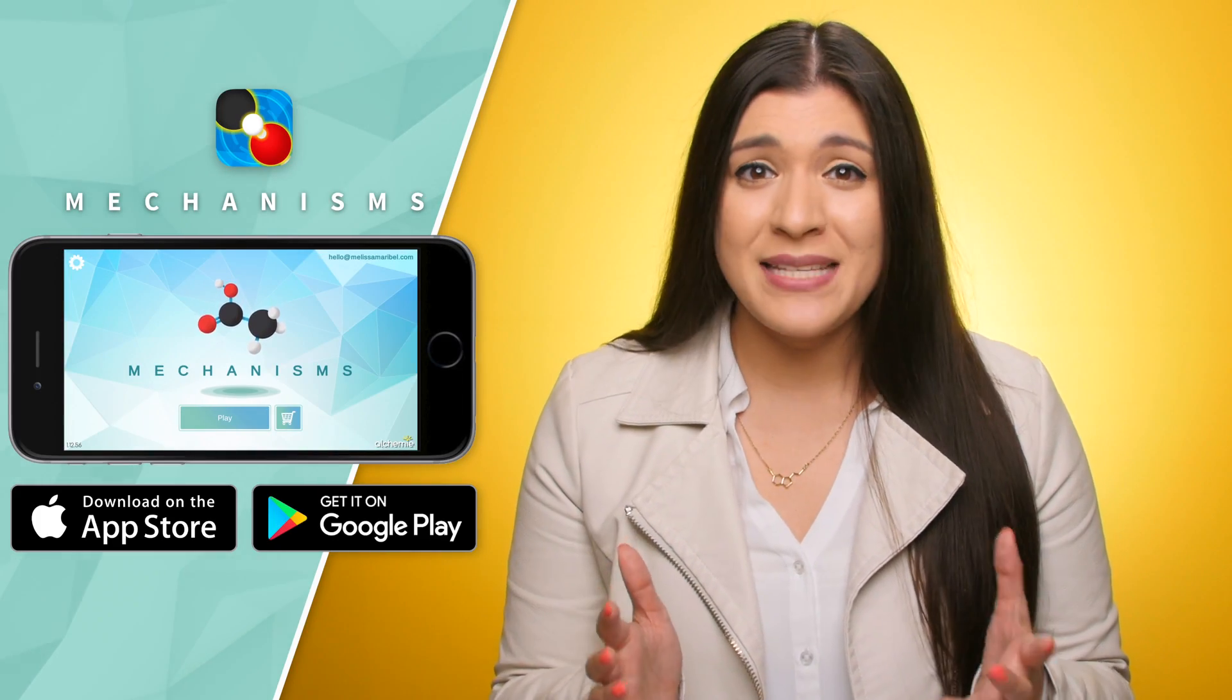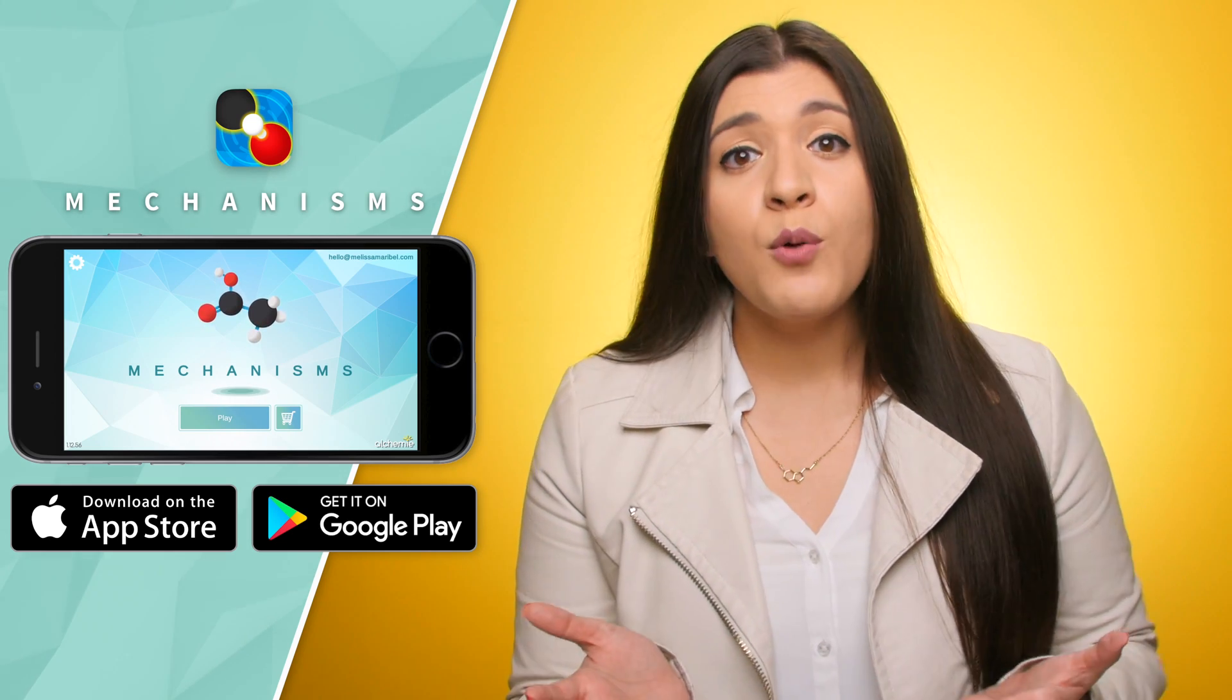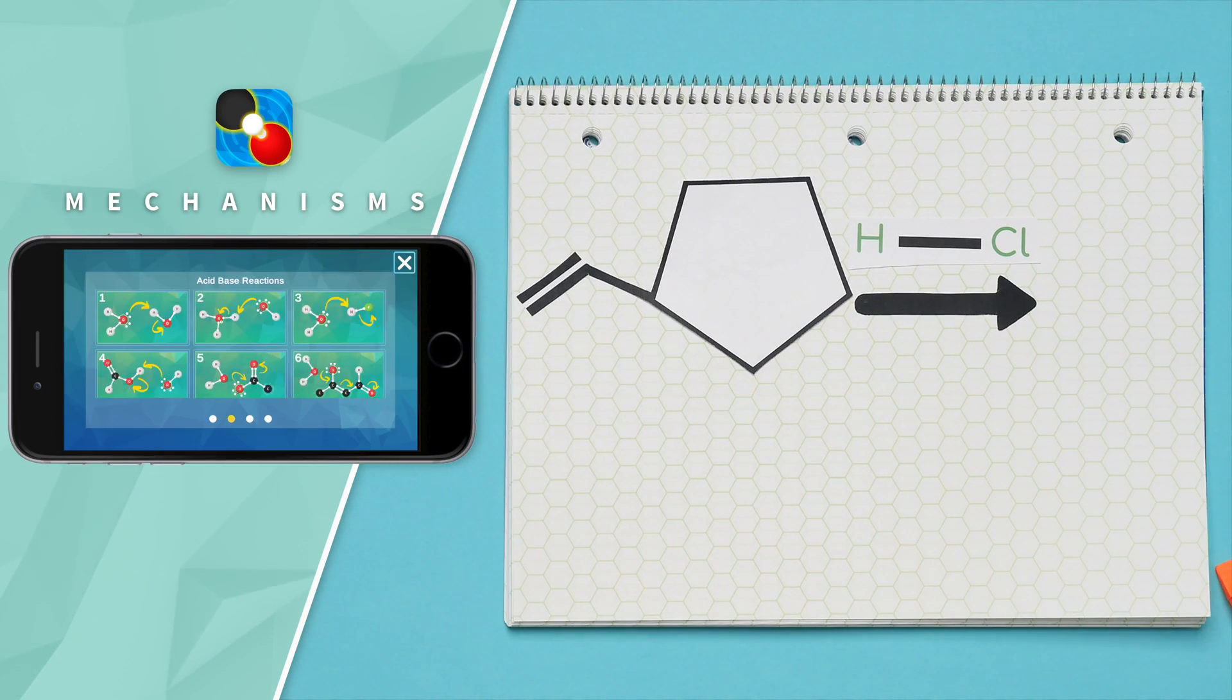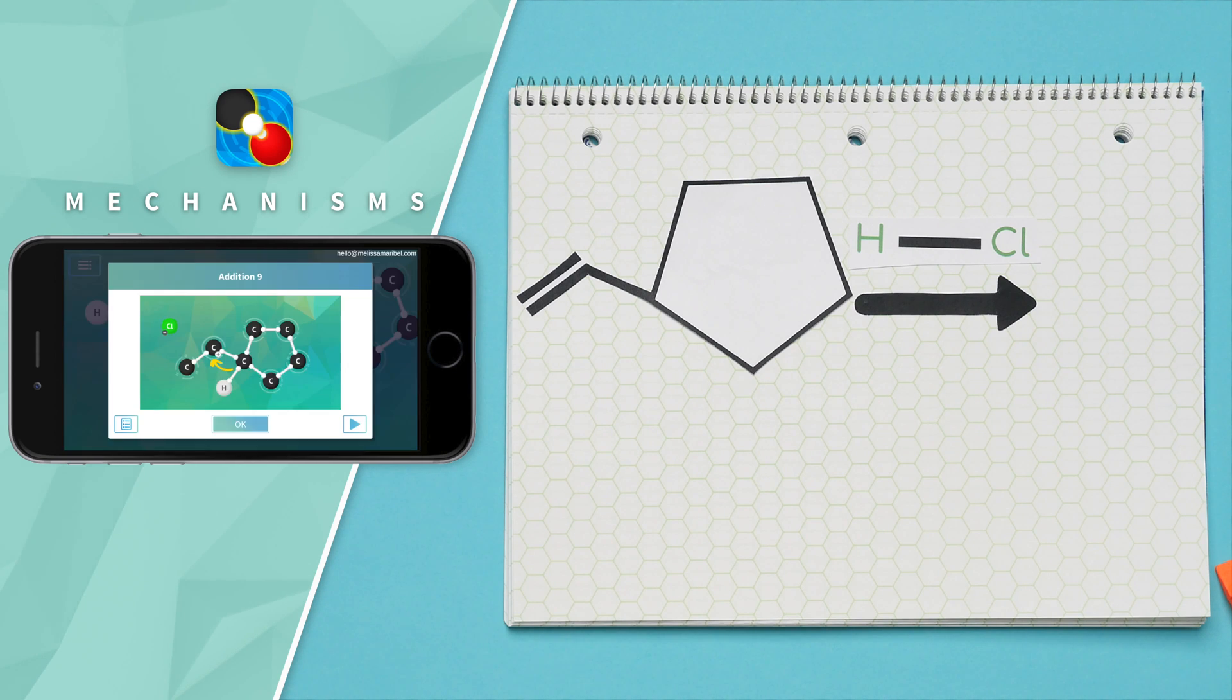To really see how electrons move, I'll be using the Mechanisms app. If you would like to follow along with me, you can download the app using the link in the description. Our example is in the Essentials pack, which is free, and it's under the third section, under Addition, it's number nine.